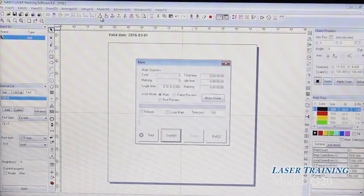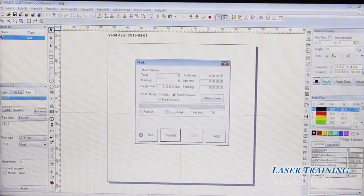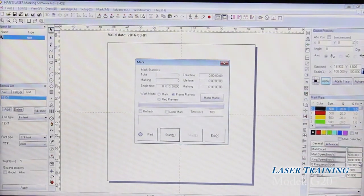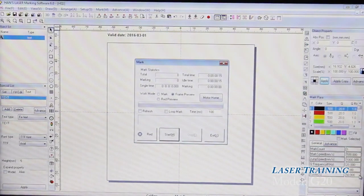give us a preview of the area we're going to mark. The adjustments are made over here for power, the speed that you want to mark, and different settings. We're just going to use this as an example.